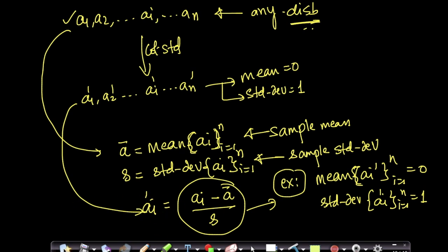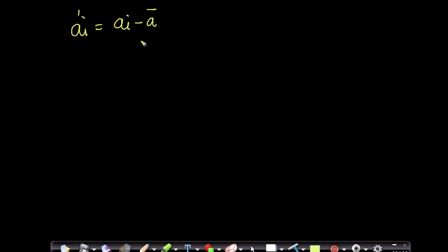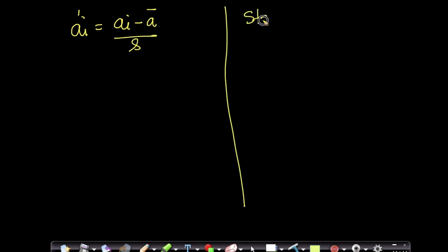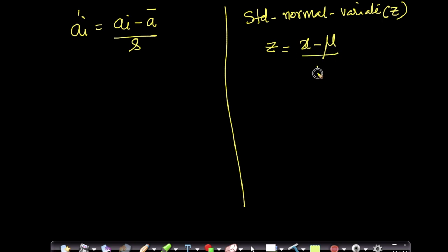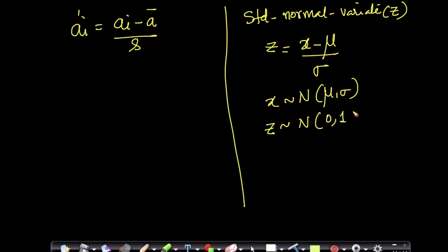This formula looks very similar to something from probability. When we learned about the standard normal variate z, we said z = (x − μ) / σ. If x is normally distributed with mean μ and standard deviation σ, then z is normally distributed with mean 0 and standard deviation 1.